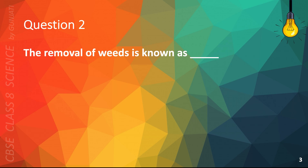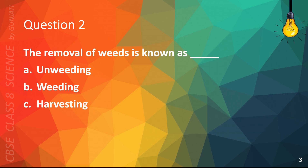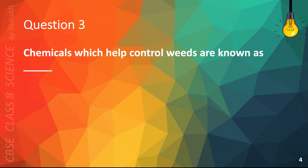Question 2. The removal of weeds is known as: A. Unweeding, B. Weeding, C. Harvesting, or D. Uprooting. The correct answer is B. Weeding.